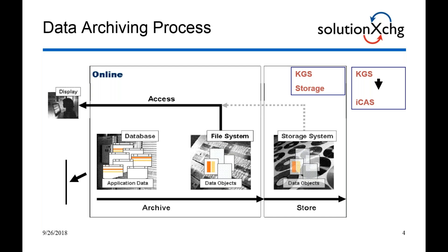The third step is the store step. You have the file sitting in the file system, and the final step would be to move those files from the file system to a storage system — for example, a KGS storage system utilizing the ICAS backend storage media. As the data is archived, what we want to focus on is that access is still available from an end user's perspective. Once data is archived, it doesn't mean that the data is no longer available to be viewed.